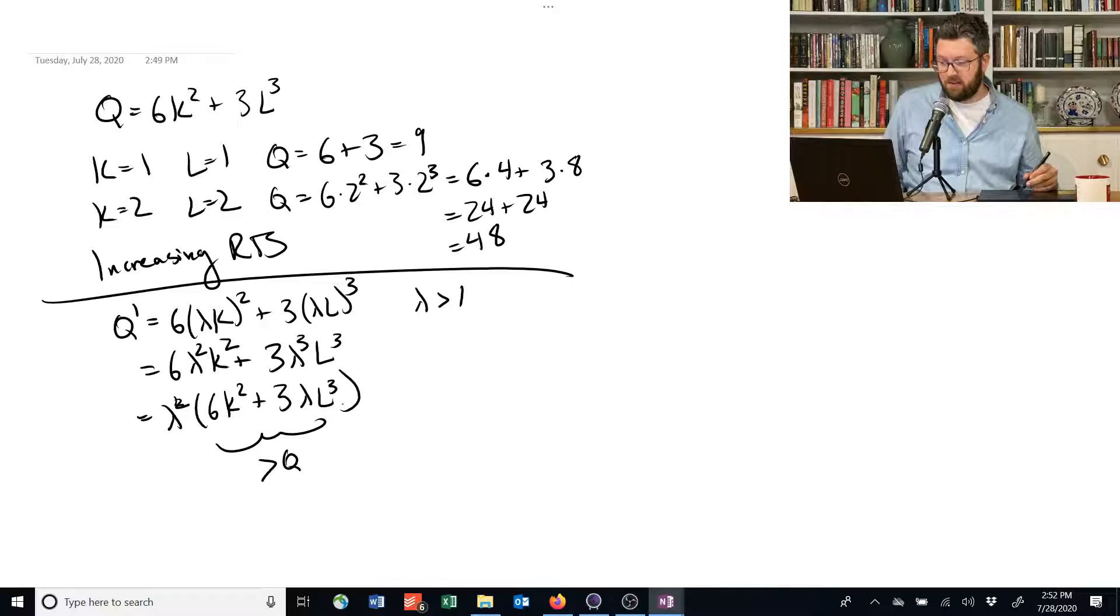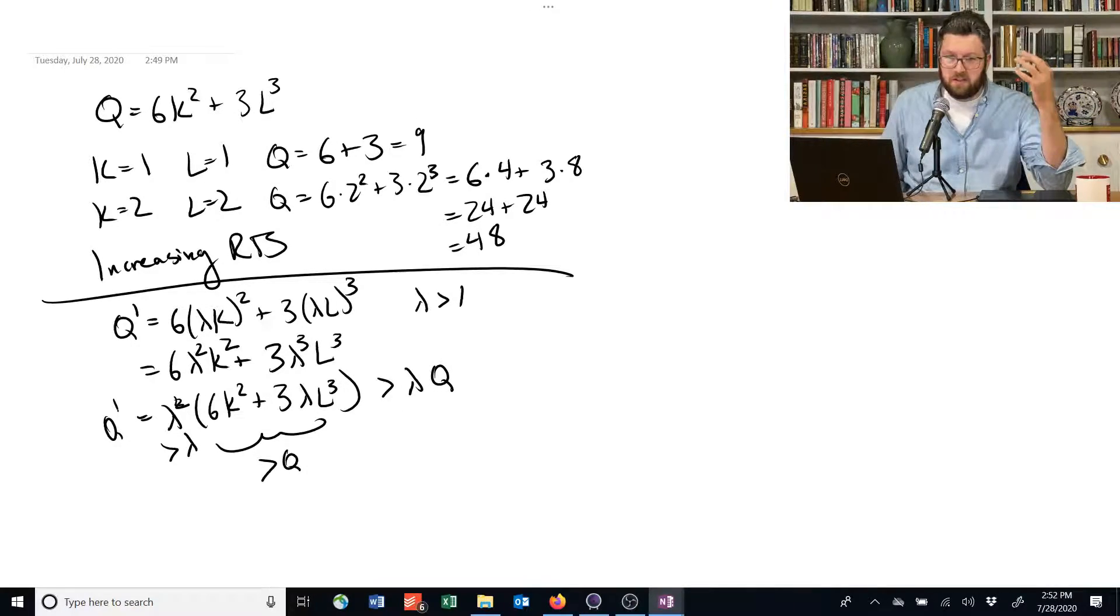And this lambda squared down here is going to be greater than just lambda. And so the whole thing is going to be basically greater than lambda times q. Another way to sort of argue that this function has increasing returns to scale.